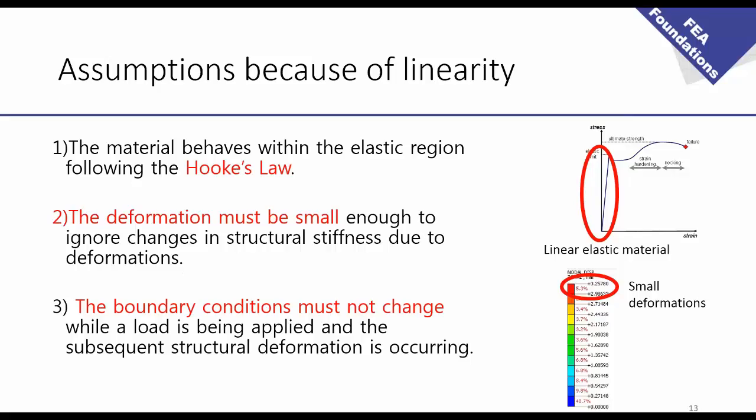So what are the main assumptions? You have two types of assumptions. You have the assumptions because of the linearity. Three main assumptions. The first is that your material behaves within the elastic region following the Hooke's law. So you see on the right, you have the curve. This is a general curve for steel material. And you always suppose that you are in the elastic region here on the left, which is considered as linear. So you have linear relation between the stress and the displacement. So deformation must be small. This is the second thing. Deformation must be very small enough to ignore the changes in the structural stiffness due to the deformation.